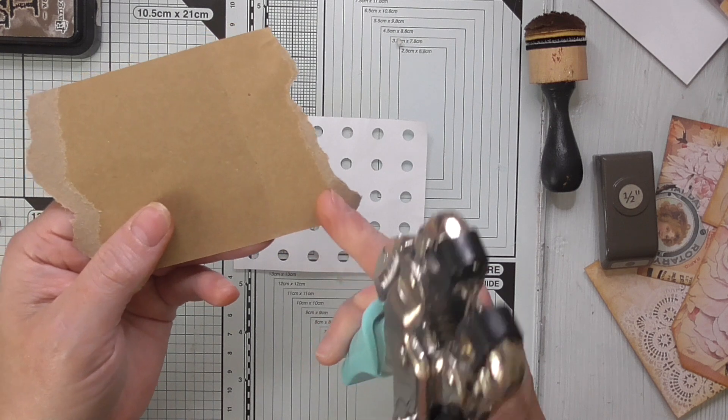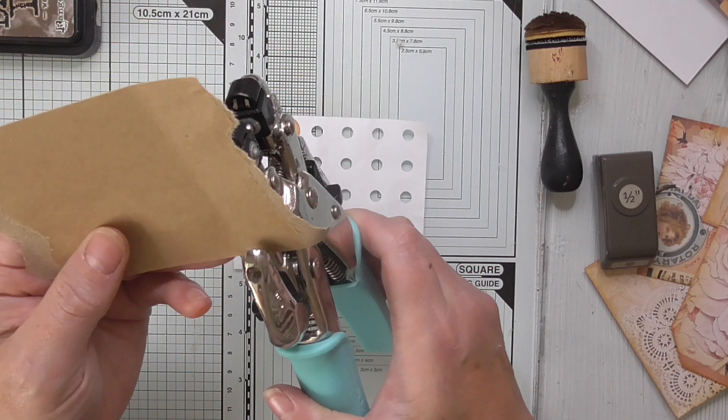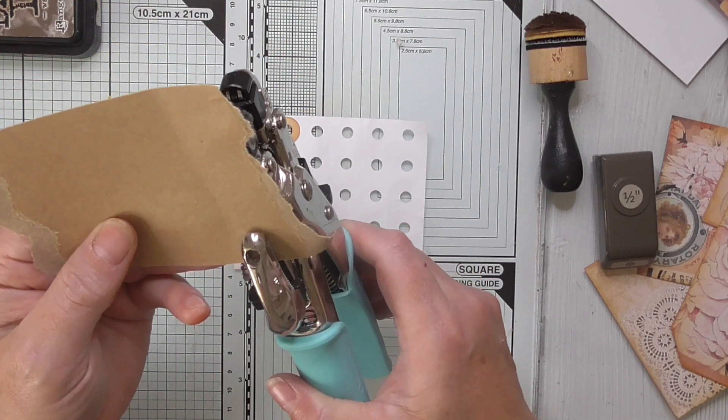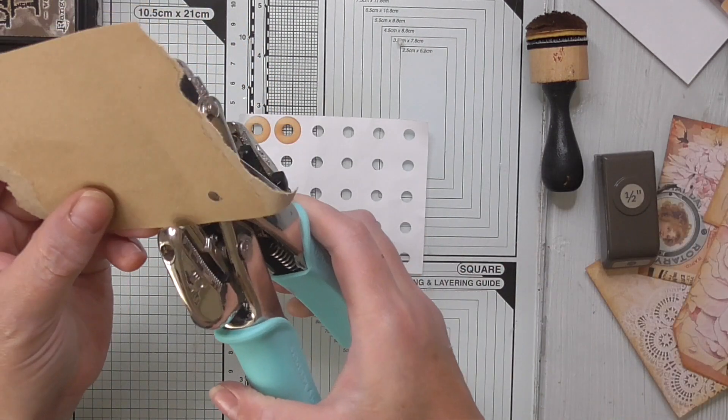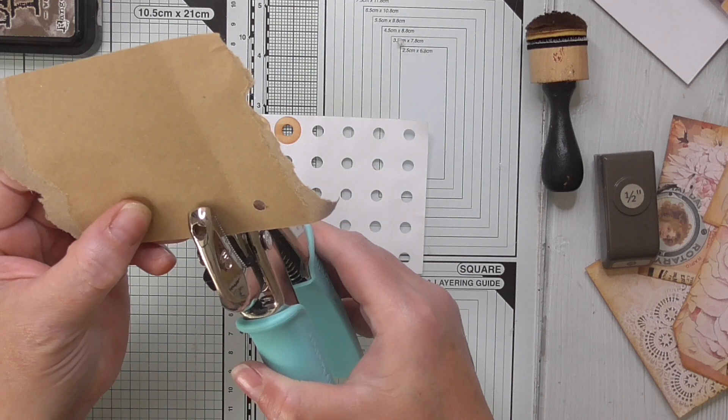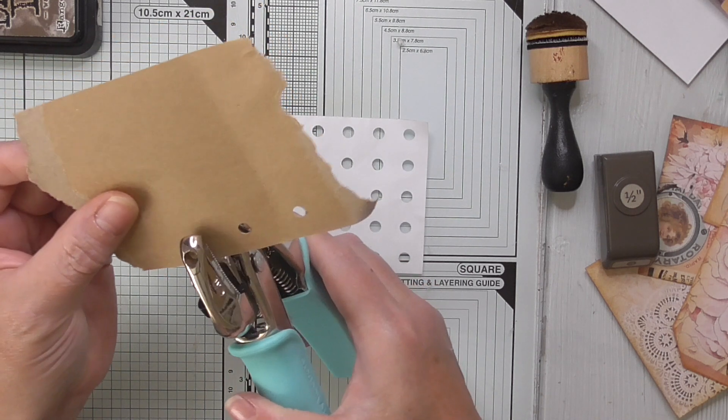Now make sure you leave space top, bottom, and side to side - plenty of space - because we're gonna make another hole in a minute. You can do a few in a row, just make sure you space them out nicely.